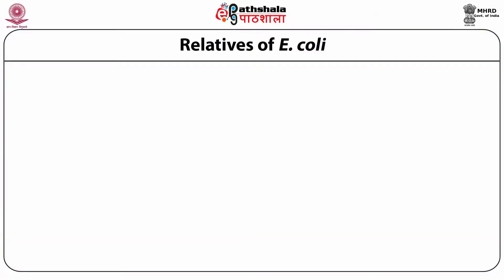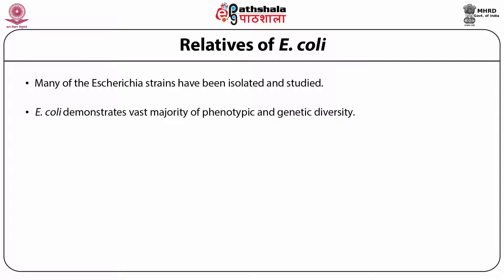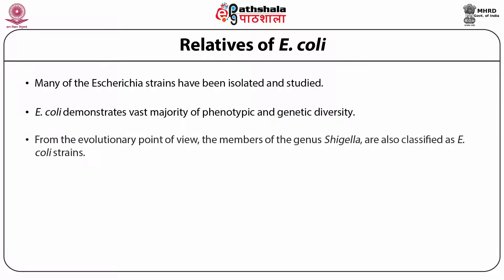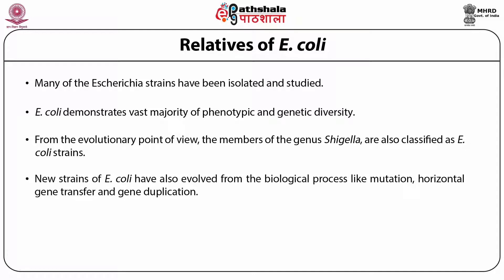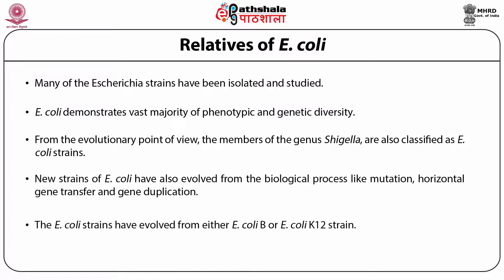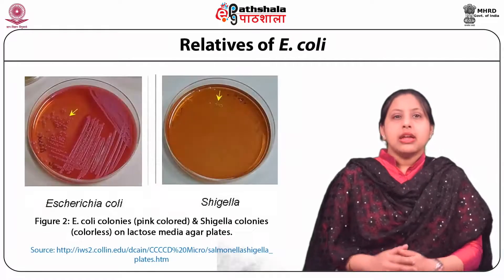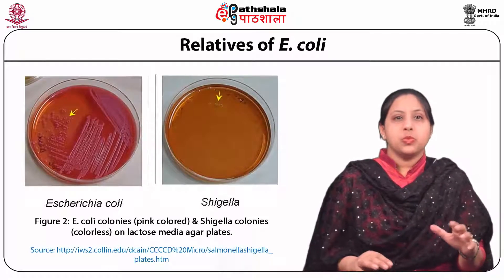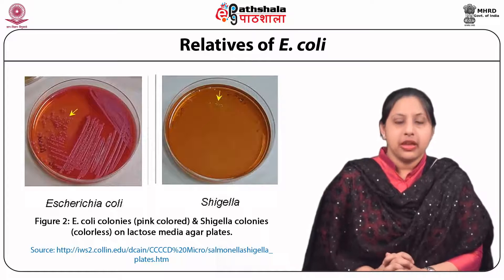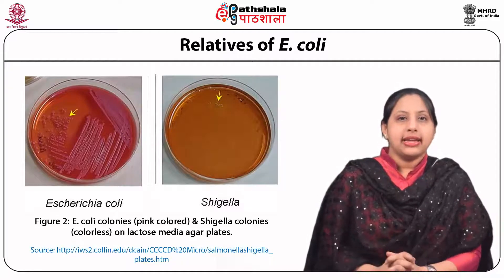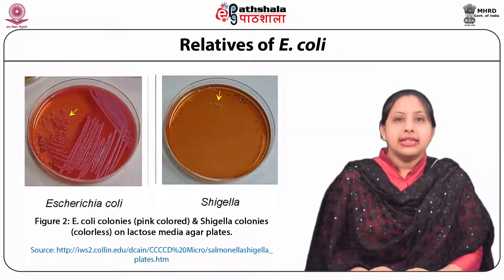Many Escherichia strains have been isolated and studied. E. coli demonstrates vast majority of phenotypic and genetic diversity. From an evolutionary point of view, members of the genus Shigella are also classified as E. coli strains. New strains have evolved through mutation, horizontal gene transfer, and gene replication. The most widely used strain in laboratories and research is the K12 strain DH5 alpha, with B and K referring to serotypes based on surface antigens.